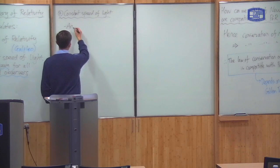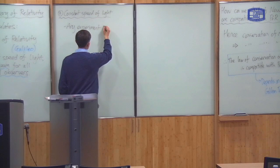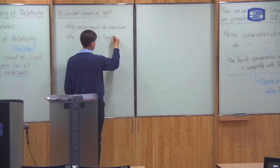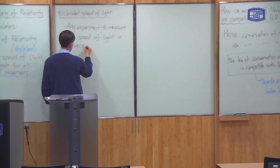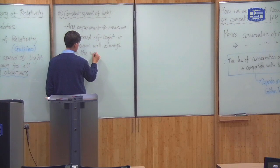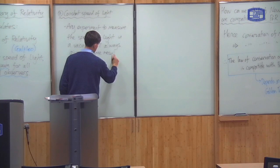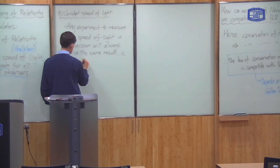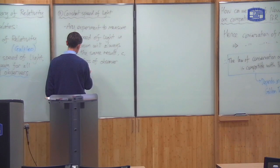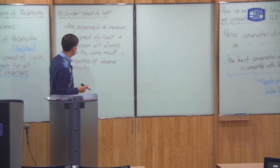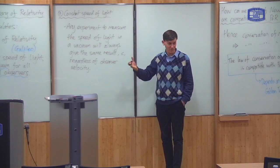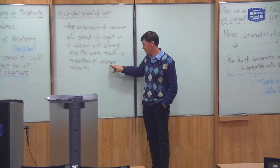Any experiment to measure the speed of light in a vacuum will always give the same result, which is c, regardless of the observer's velocity. More specifically, no matter who's doing the experiment to measure the speed of light, you'll always get the same speed, regardless of who is doing the experiment and their velocity — provided you do the experiment correctly.